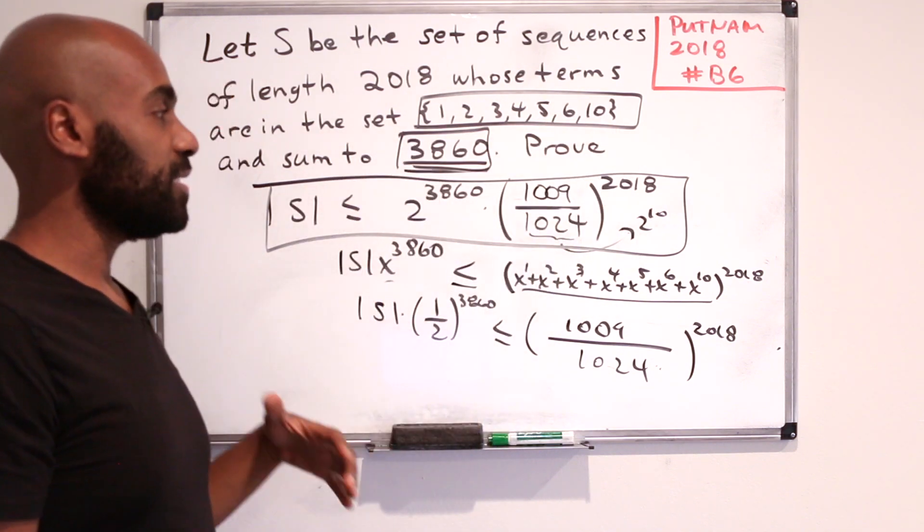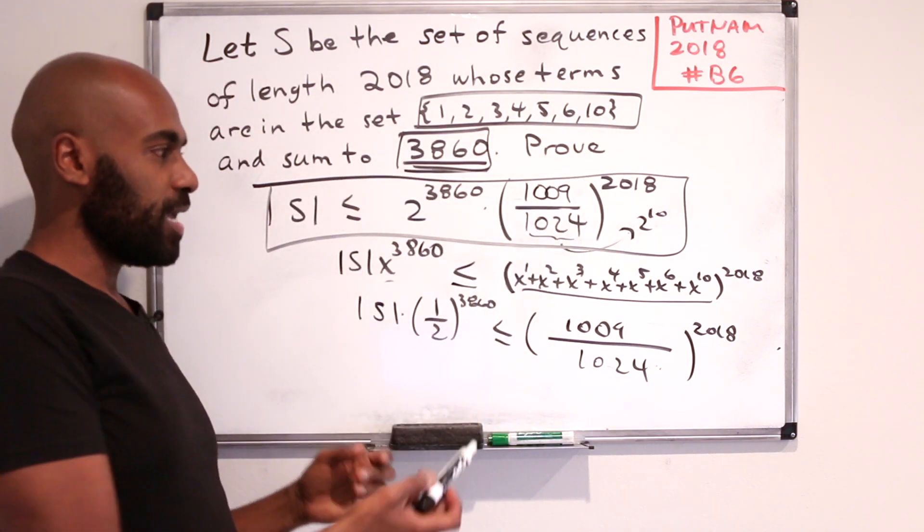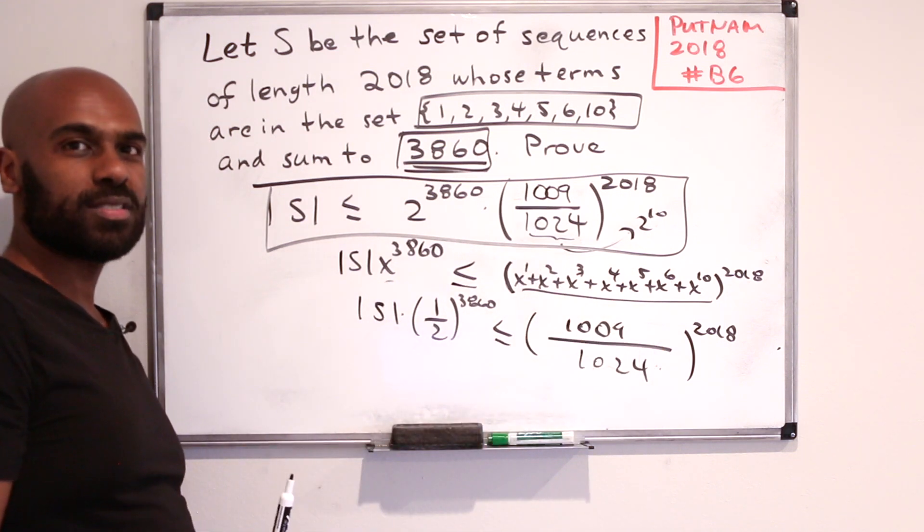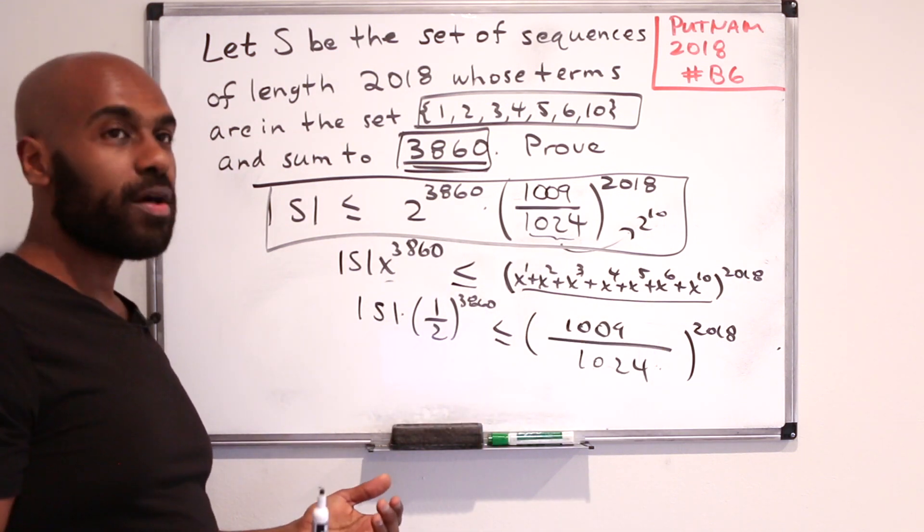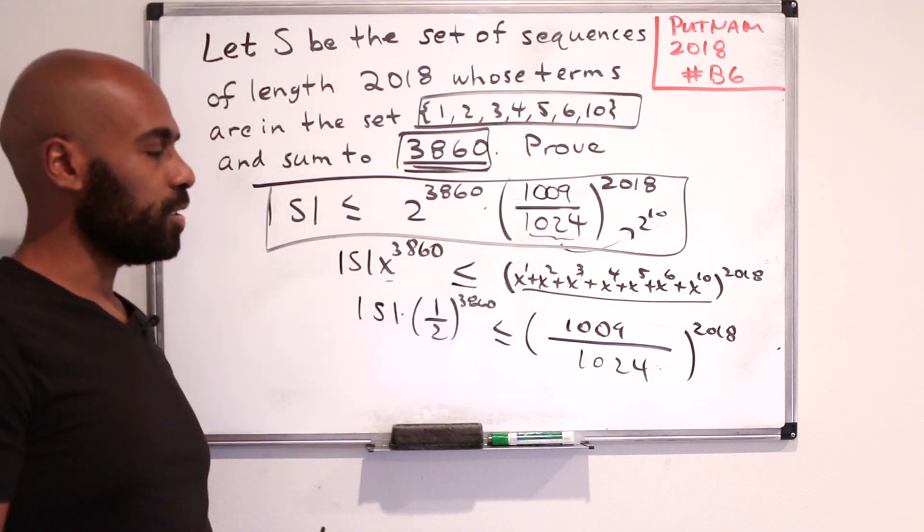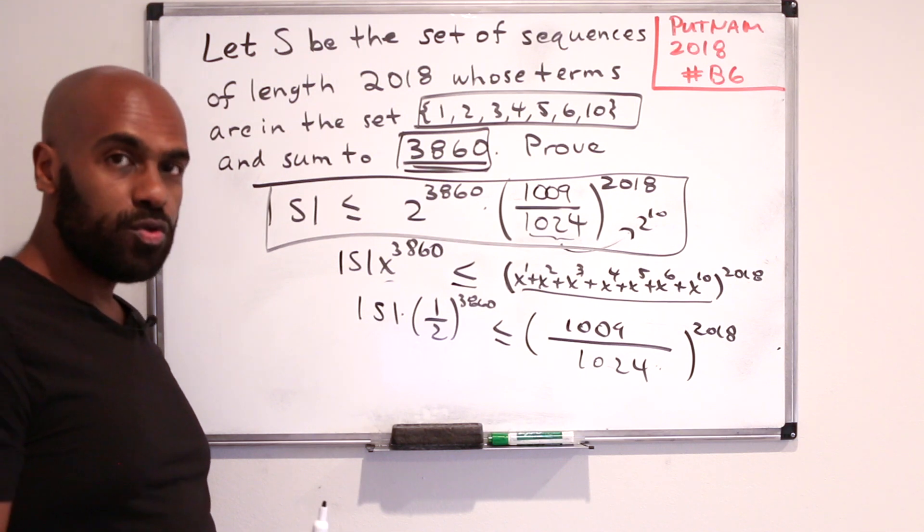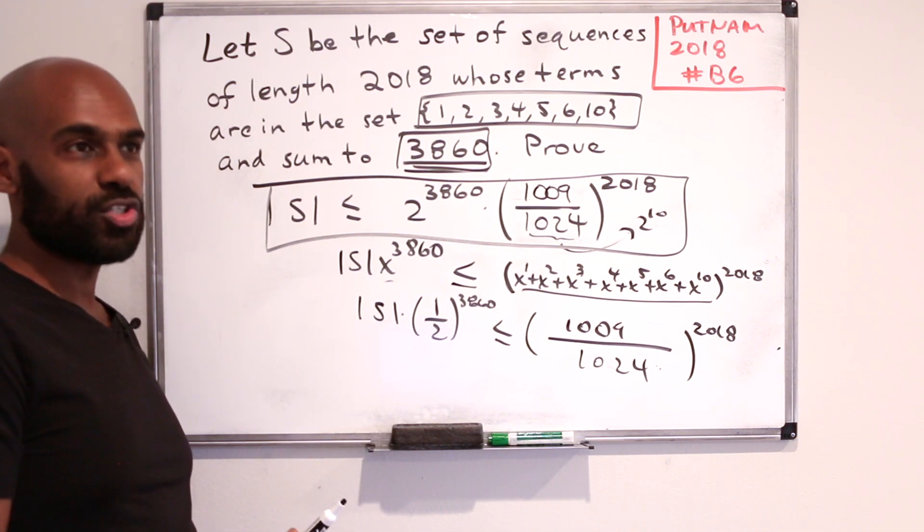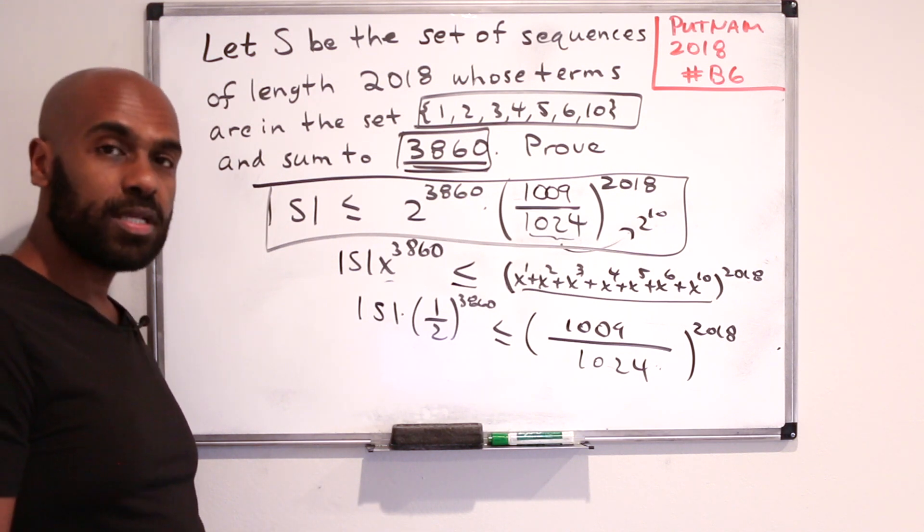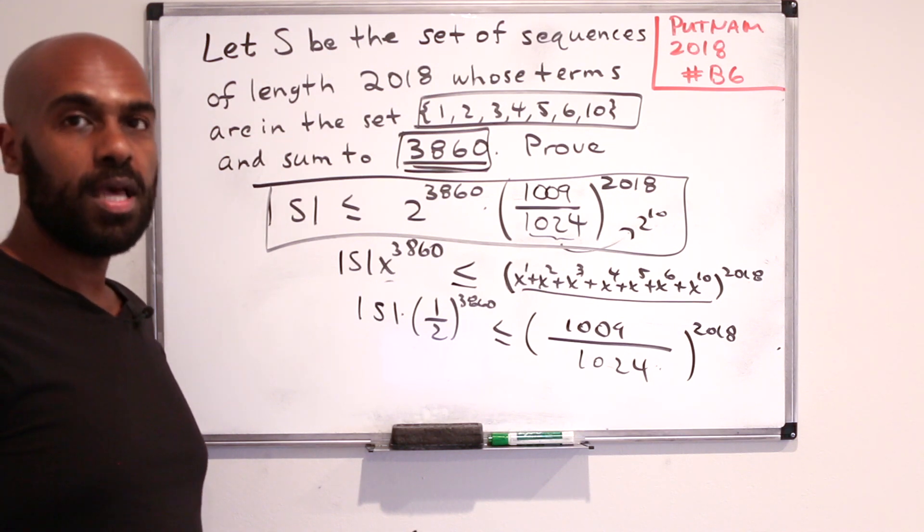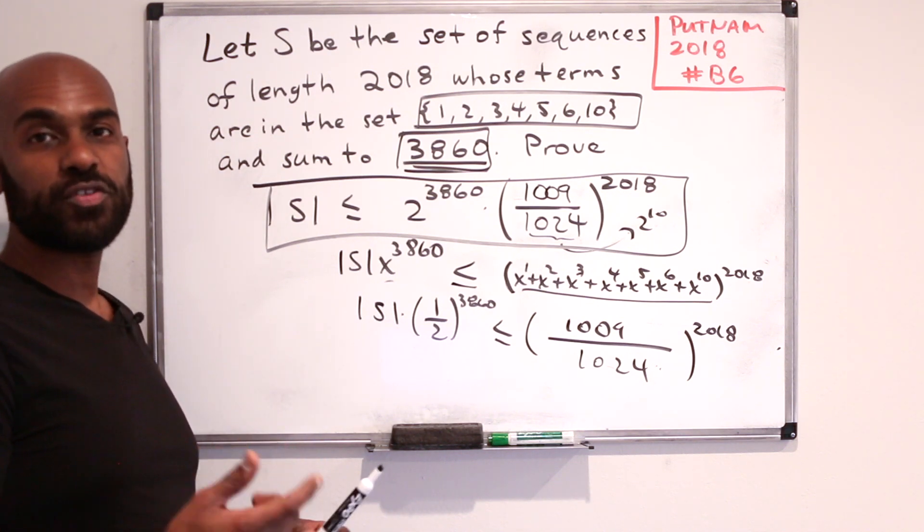And this is the technique that's very useful whenever you're looking at sums of elements in restricted sets, especially when they're weird like this, where you go from 1 to 6 and then all of a sudden jump to 10. You can at least make some leeway by looking at this polynomial representation and extracting coefficients. So a cool way to solve a problem that typically would be considered very difficult, on a very difficult contest to begin with, using some strategies that exploit generating functions as a great tool to use. So I hope you liked today's video. If you did, click the like button. If you want to see more videos like this, definitely subscribe to the channel and click the bell for notifications on future videos.